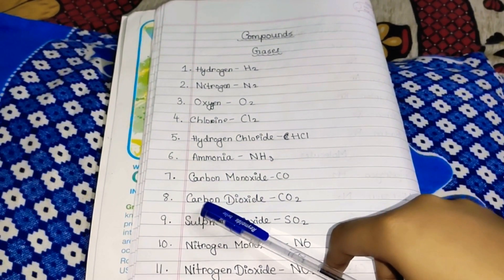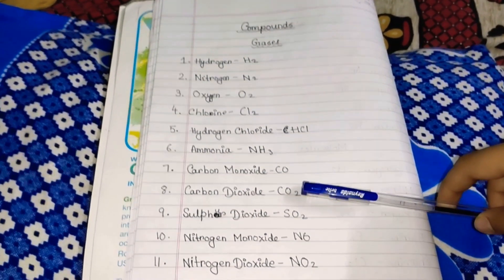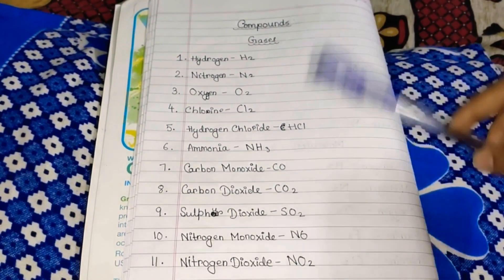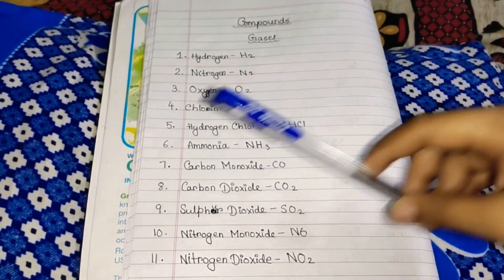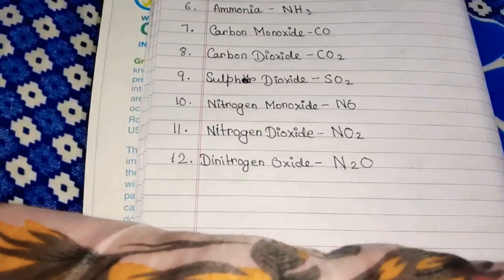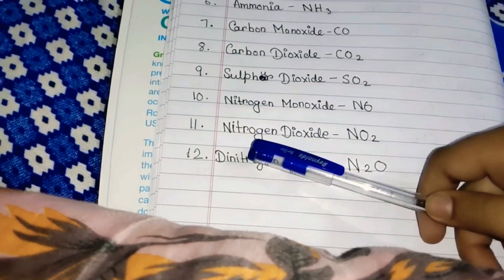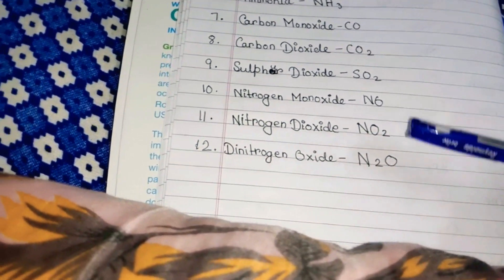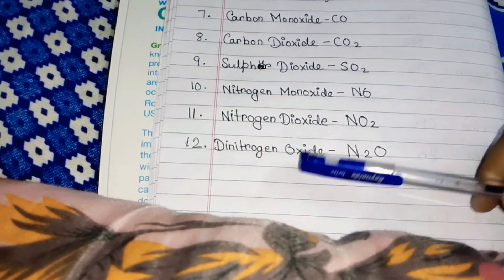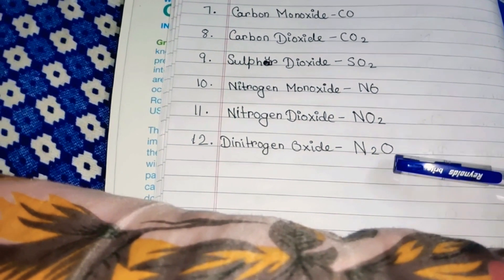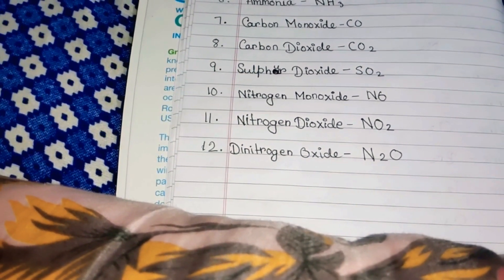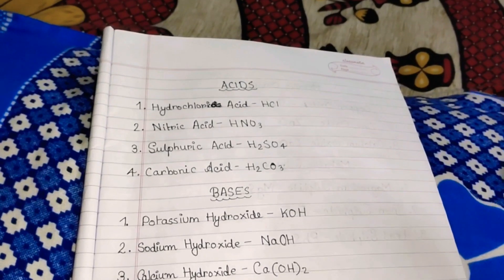Eighth, Carbon Dioxide CO2. Ninth, Sulfur Dioxide SO2. Tenth, Nitrogen Monoxide NO. Eleventh, Nitrogen Dioxide NO2. Twelfth, Dinitrogen Oxide N2O. These were all the gases and the compounds. Now let us move to the acids.